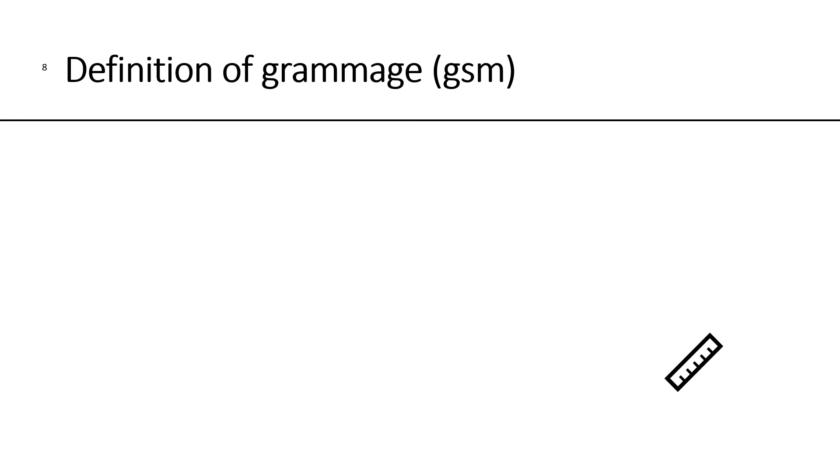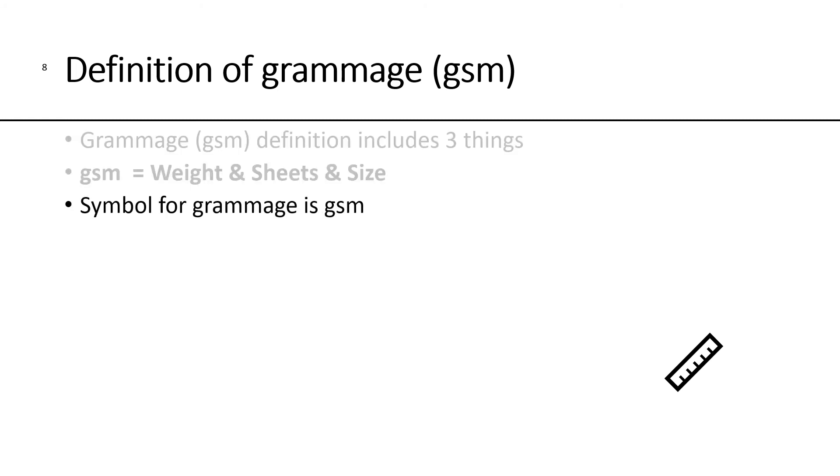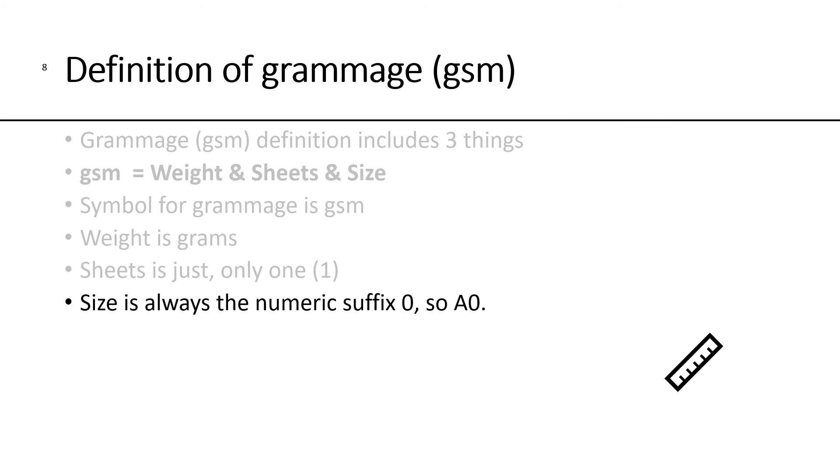Let's now determine how we can calculate grammage or GSM. Again, it's three things in the definition: the weight, the number of sheets, and the size. The symbol for grammage is GSM. The weight is in grams, not pounds. It's only just one single sheet, not 500 sheets or a ream. And the size is always going to be A0. That makes it more convenient and less confusing than basis weight.